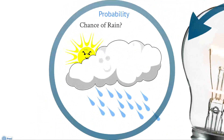Probability. Everyone's heard the weatherman say that there's going to be a 70% chance of rain, or rain is likely, unlikely, chance of fair skies, chance of clouds. Everything has a chance — nothing's for certain. That's where probability comes into play. In the weather it happens all the time, and in poker we use probability to determine winning situations and losing situations. Let's look at some different ways that you can express probability and what it really means.